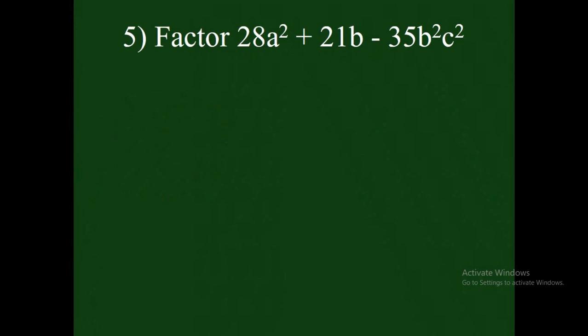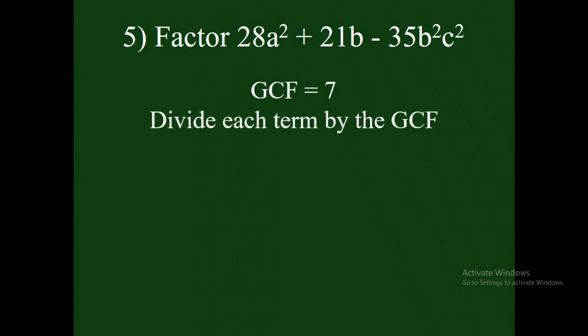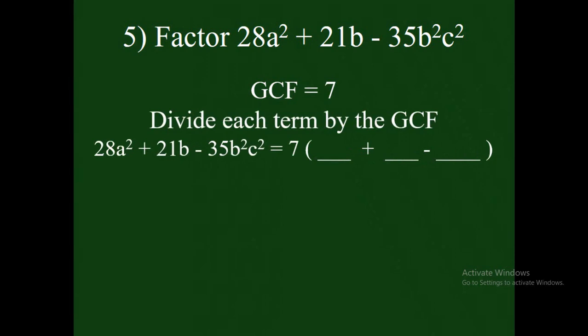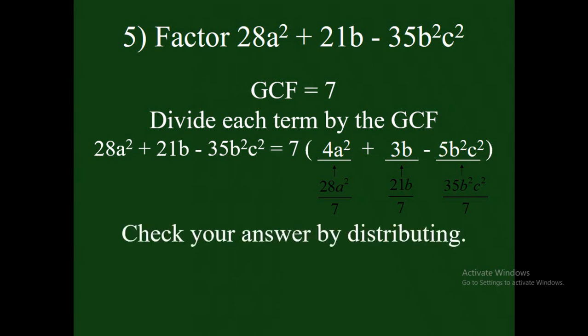Let us have another example: factor 28a squared plus 21b minus 35b squared c squared. In this example, the GCF is 7 because the literal coefficients are not the same. So divide each term by 7: 28a squared divided by 7, plus 21b divided by 7, minus 35b squared c squared divided by 7. The final answer is 7 times the quantity 4a squared plus 3b minus 5b squared c squared. You can check your answer by distributing 7.